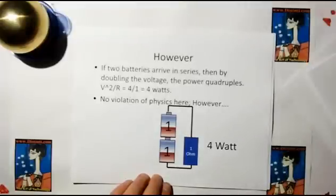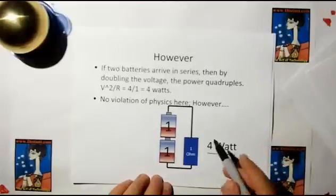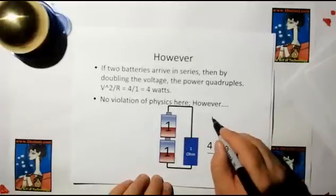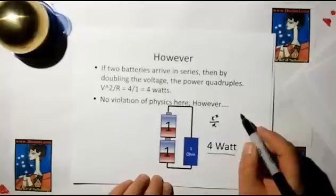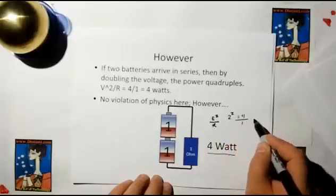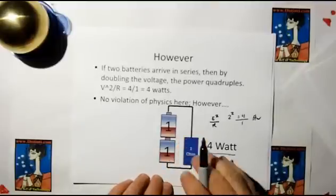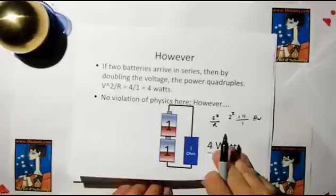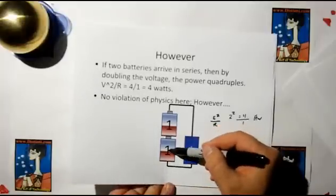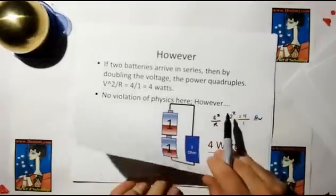But if we change it up such that when the batteries arrive, they stack in series, that's when we can get four watts because we know that E squared over R. So two volts squared is equal to four over one-ohm equal four watts. And so we have no violation of physics here. So we've doubled the energy into the load. Doubling the energy gives us four times the power.